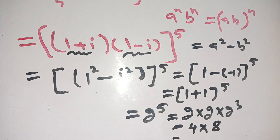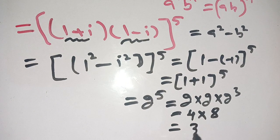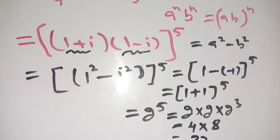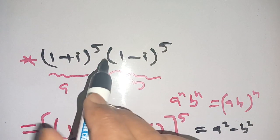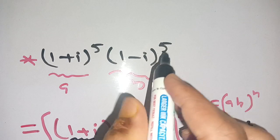And 8 times 4 becomes 32. Thus (1+i)^5 times (1-i)^5 is equal to 32, which is our final answer.